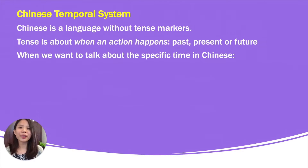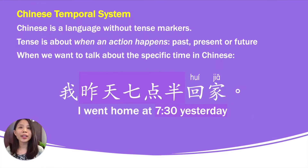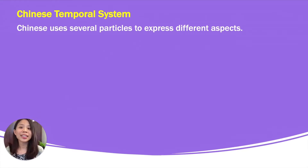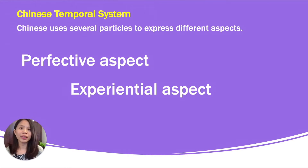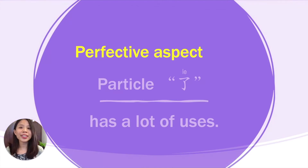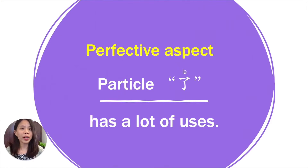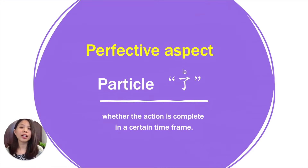For example, if you want to tell others 'I went home at 7:30 yesterday,' we have to use particles. Chinese uses several particles to express different aspects — for example, perfective aspect. Today we will focus on the perfective aspect with particle 了. 了 has a lot of uses, but we will focus on this function: whether the action is complete within a certain time frame.